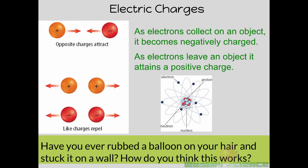Why do objects become negatively and positively charged? That all depends on the amount of electrons they have in comparison to their protons. A neutral atom has an even amount of protons and electrons — the charges cancel out. But electrons can leave the atom and it can become an ion. When an electron leaves an atom it will join another atom: the atom that loses the electron becomes positively charged, and the atom that gains the electron becomes negatively charged. So when you gain electrons you become negatively charged, and when you lose electrons you become positively charged.